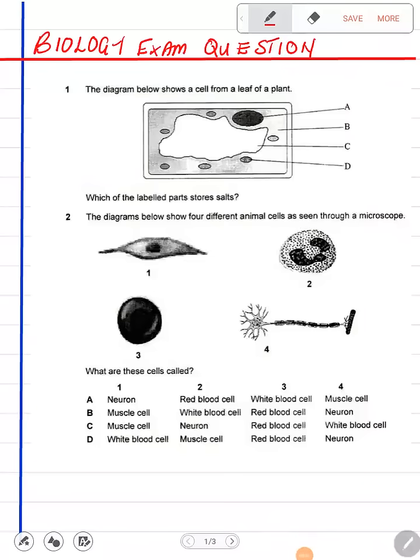Okay, so let's look at these two biology exam questions. Question one says the diagram below shows a cell from a leaf of a plant, so this cell is coming from the leaf of a plant.